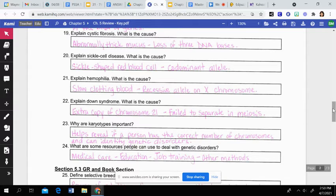And this is caused by a codominant allele that shows up along with the normal allele. Then hemophilia is when a person has slow clotting blood. So it clots very slowly or not at all. And this is caused by a recessive allele on the X chromosome. And then Down syndrome is when a person has an extra copy of chromosome 21. And the cause of this is during meiosis. When the chromosomes fail to separate properly, they get left with extra chromosomes.